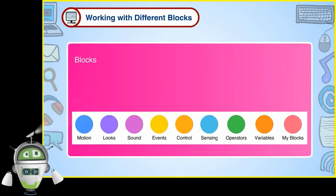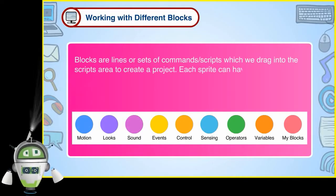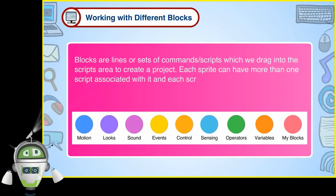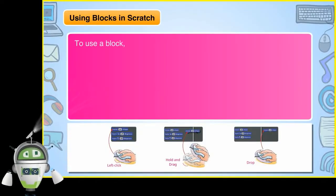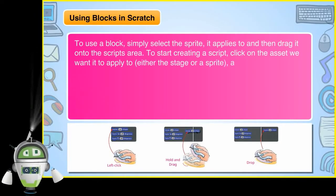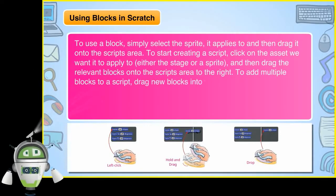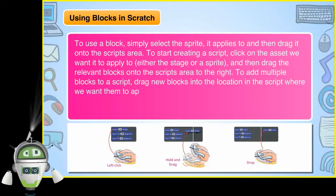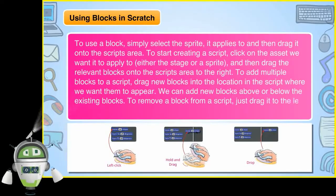Blocks are lines or sets of commands or scripts which we drag into the scripts area to create a project. Each sprite can have more than one script, and each script can have as many blocks as needed. The blocks are connected just like a jigsaw puzzle to perform a task. To use a block, select the sprite it applies to and drag it onto the scripts area. We can add new blocks above or below existing blocks. To remove a block from a script, just drag it to the left, away from the scripts area.